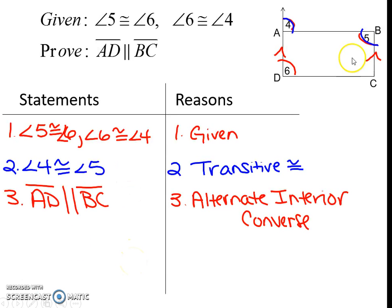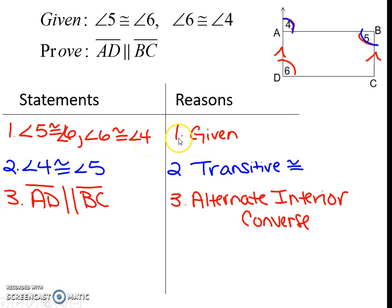First one — we have a picture diagram here. We have angle 5 and 6 are congruent to each other, and angle 6 and 4 are congruent to each other. You need to prove that segment AB and segment BC are parallel to one another. So what you're going to do is first write statement number 1: angle 5 and angle 6, and angle 6 and 4 are congruent — and you write number 1, given. You always have to number each statement: 1, 2, 3.